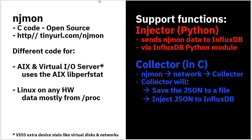For Linux, mostly the data is coming from the /proc file system, which unfortunately uses text files, so we have to do a whole load of parsing to get the right format. As well as NJMon, there are a couple of support functions. We want to inject the data we gather in JSON format, and then use Python and an injector tool to push that into the InfluxDB database. Also, to make life easier, we've got what we call a collector, which allows NJMon instances to connect to the collector on a central machine, and it does the injection for you.